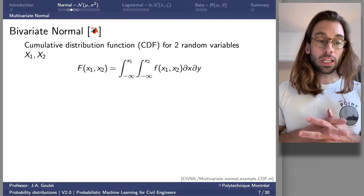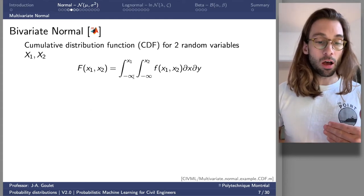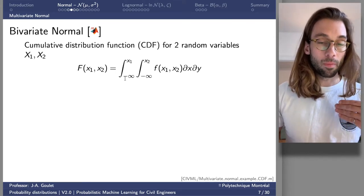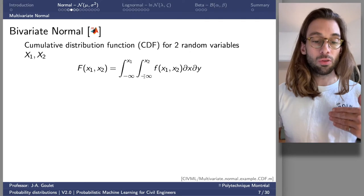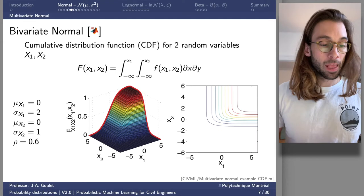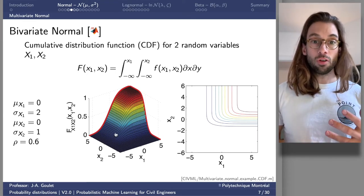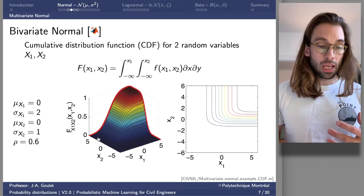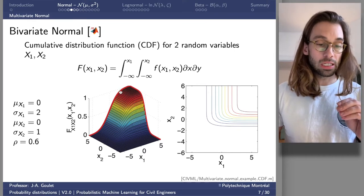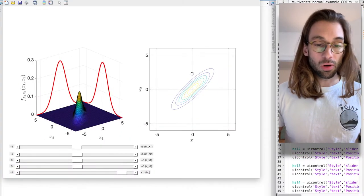The bivariate normal CDF is obtained by integrating from minus infinity to X1 and minus infinity to X2. It can be represented as a surface or contour, with the marginal CDFs for X1 and X2 shown in bold red. In the interactive example, modifying X1 causes a translation of the CDF, and modifying X2 changes the other dimension.